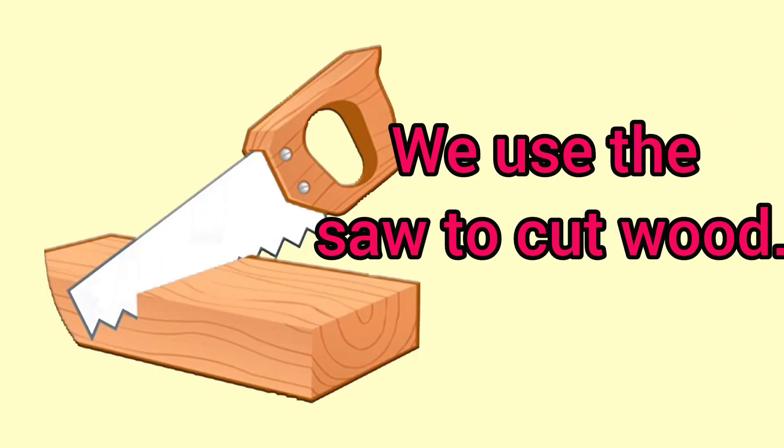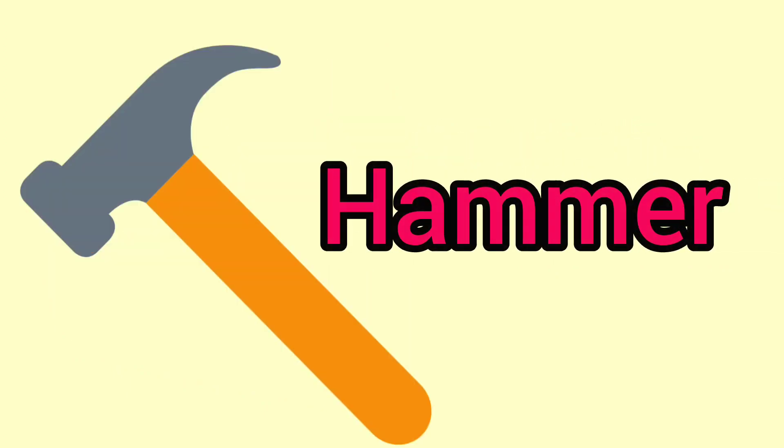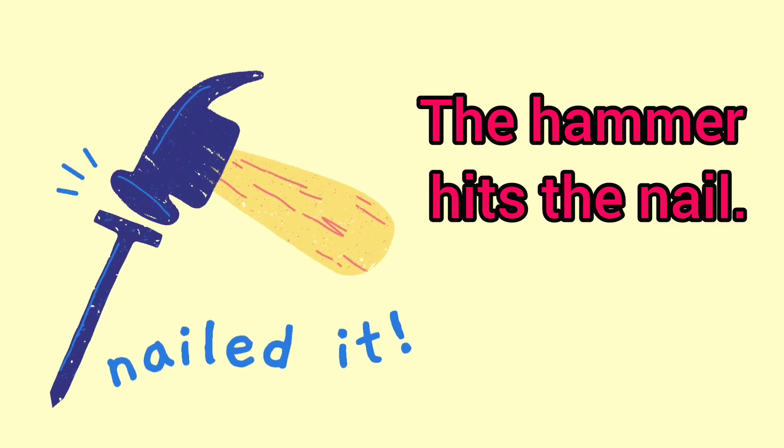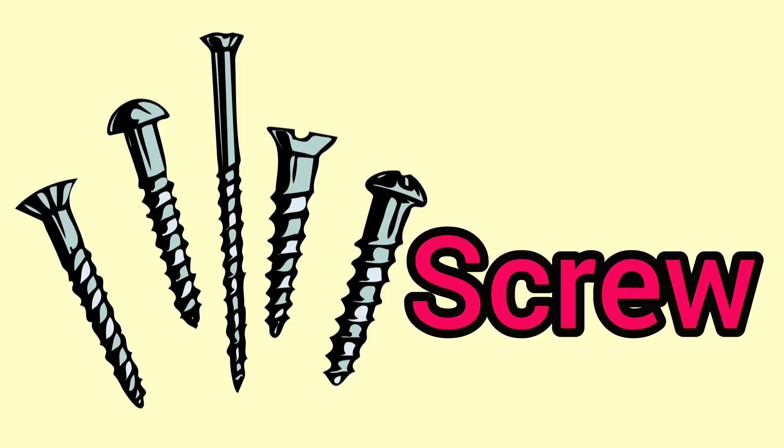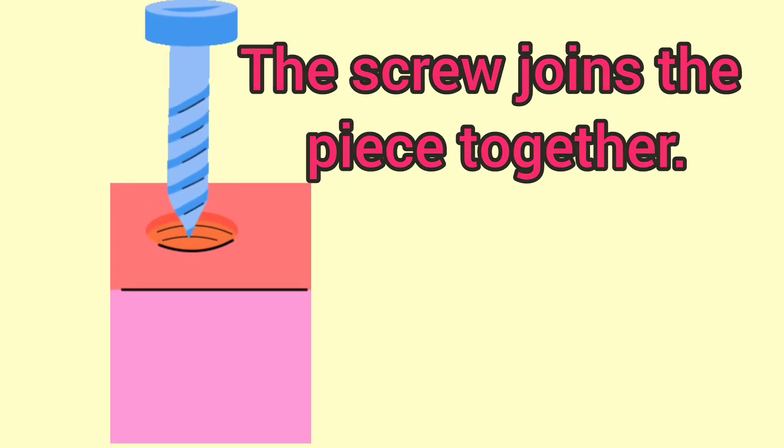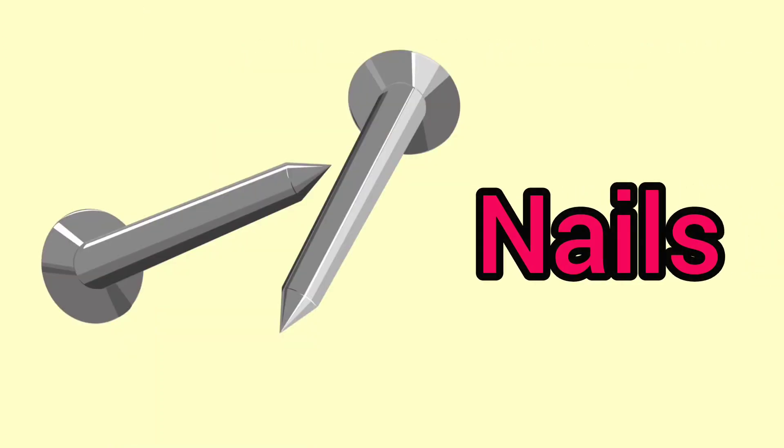the saw to cut wood. Hammer: the hammer hits the nail. Screw: the screw joins pieces together. Nails: we